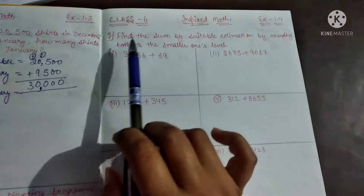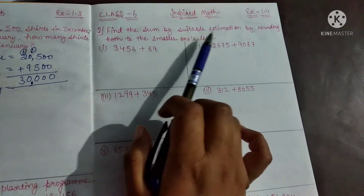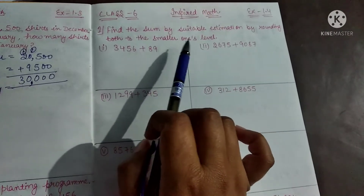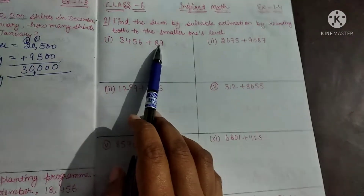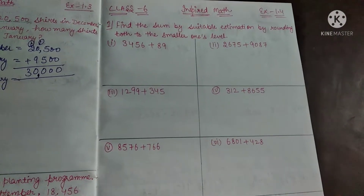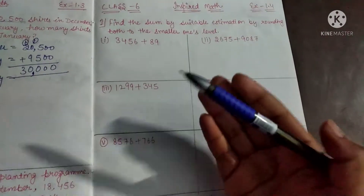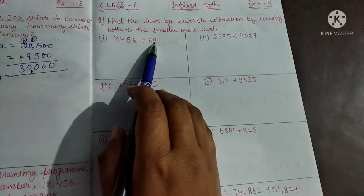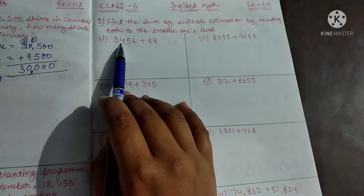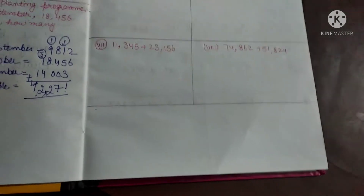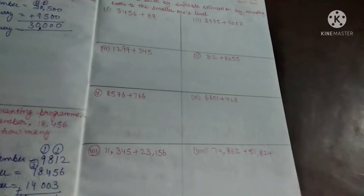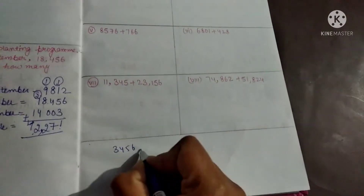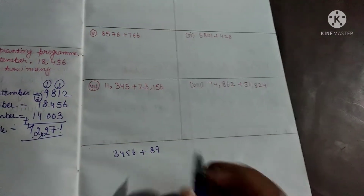Question number one: find the sum using stable estimation by rounding both numbers to the smaller level. This means we first round off to the nearest thousand place, then we will add the smaller ones. For rounding off, we will add the lowest round off — like 3456 plus 89 and smaller than 89.